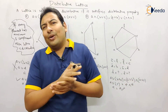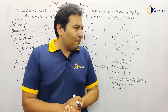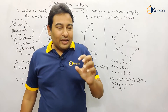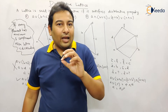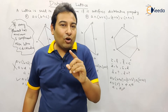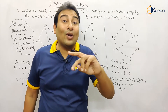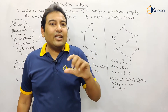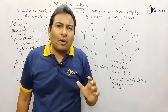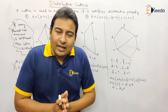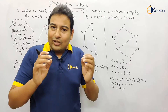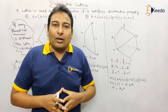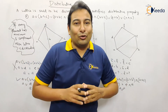Now please tell me: what about D20 — is it a distributive lattice or not? Yes, it's a distributive lattice. Why? Because if you check, every element has at maximum one complement. There are two elements which don't have a complement: 2 and 10. That doesn't matter — if a complement exists, it should be at maximum one. So according to that criteria, D20 is a distributive lattice. Hope you understood. Thank you.